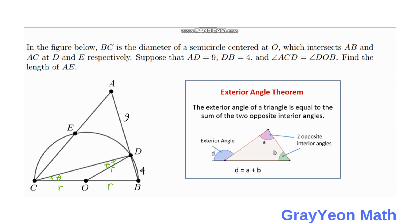From that, we can say by the exterior angle theorem that the exterior angle of a triangle equals the sum of the two non-adjacent interior angles. Since the two opposite interior angles are theta and theta, and the exterior angle is angle DOV, then angle DOV equals two times theta. And since it is given that angle DOV equals angle ACB, then angle ACB is equal to two theta.